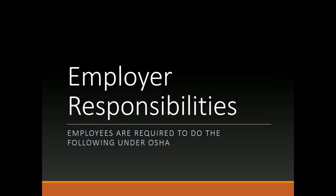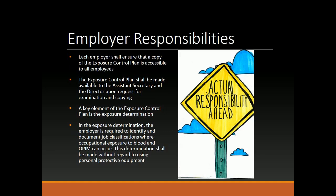Employer Responsibilities. Employees are required to do the following under OSHA. Each employer shall ensure that a copy of the exposure control plan is accessible to all employees. The exposure control plan shall be made available to the assistant secretary and the director upon request for examination and copying. A key element of the exposure control plan is the exposure determination — the employer is required to identify and document job classifications where occupational exposure to blood and a PIM can occur. This determination shall be made without regard to the use of personal protective equipment.